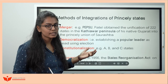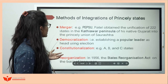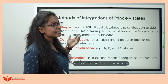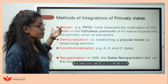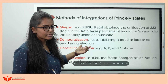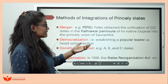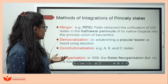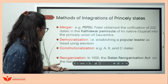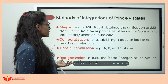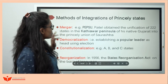Having addressed the major part of the question, let's see the various methods used for integration of princely states. First was merger — the example of PEPSU. Then democratization — electing a popular leader as their head. Then constitutionalization — giving constitutional status to these states. And then reorganization — through the State Reorganization Act. That's how you can address your body.